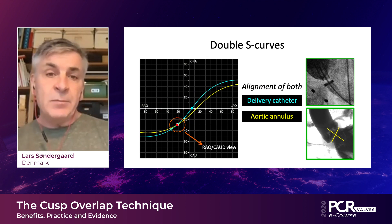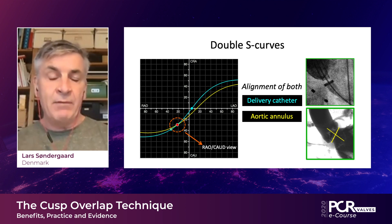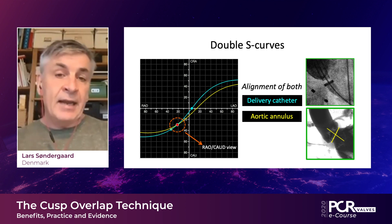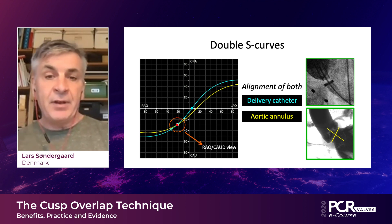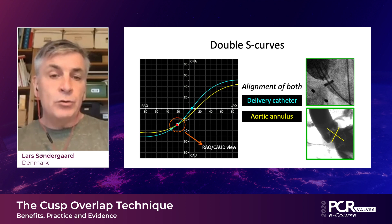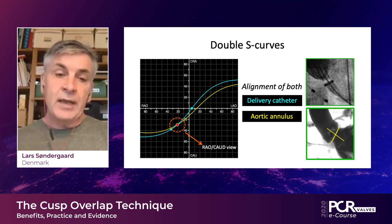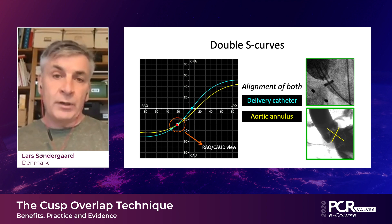Nico Piazza, years back, told us about this double S-curve. We have an S-curve for the aortic annulus — the position of the C-arm where we have the three aortic cusps aligned — but we can also have an S-curve on the delivery catheter where we have the delivery system aligned. Ideally, we want to use a position with the C-arm where these two S-curves cross, because that's going to give us both the delivery catheter and the aortic annulus aligned with the imaging plane, and that's often in an REO-caudal projection.